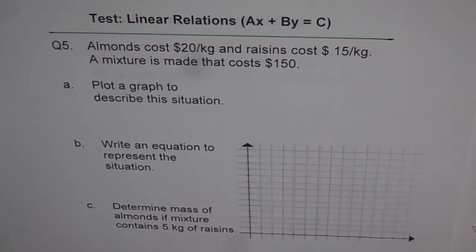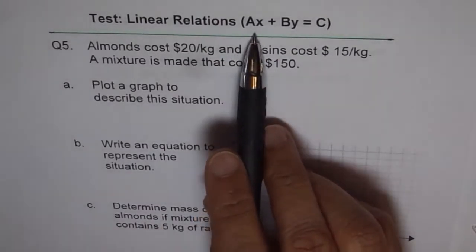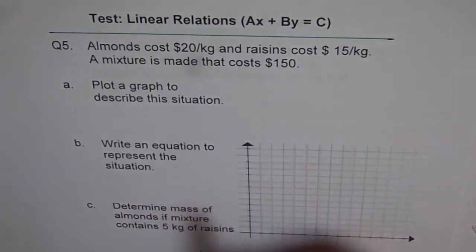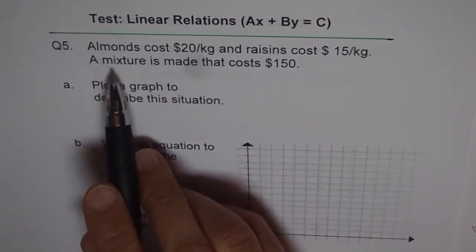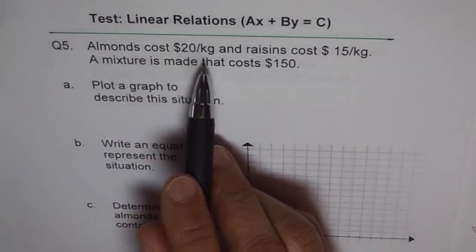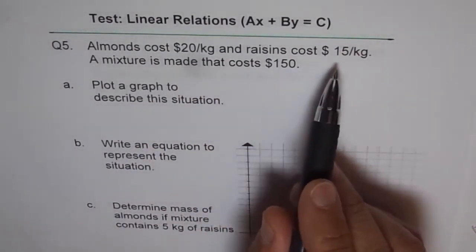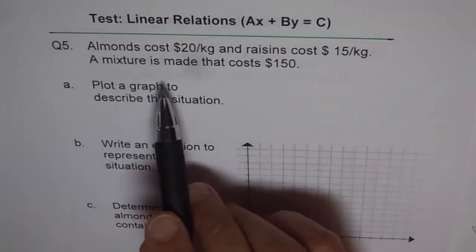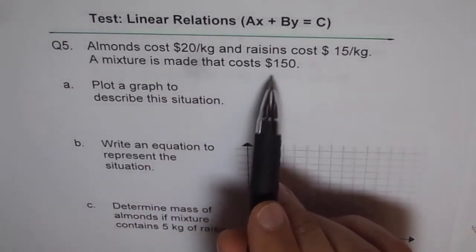My suggestions are: first, let's try to write an equation in the form of Ax plus By equals C. As we know, these situations can be easily represented by this form of equation. So almonds cost $20 per kg and raisins cost $15 per kg. Amount is in dollars. And the mixture is made that costs $150.